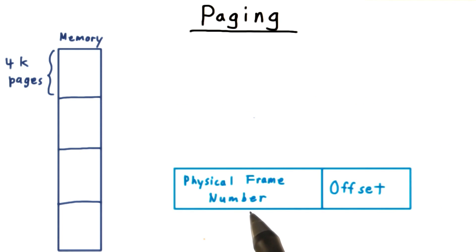The higher order bits determine the page number, also called the physical page frame. And the lower order bits determine the offset into the page.